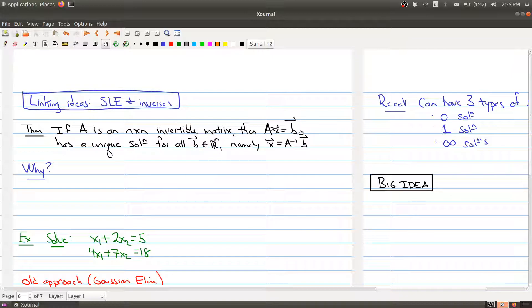So regardless of what the vector b is here, you can have a solution. And not only that, we actually have a formula to find that x. You take your vector b and you multiply it by the inverse of your matrix.